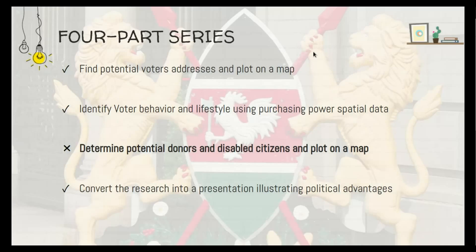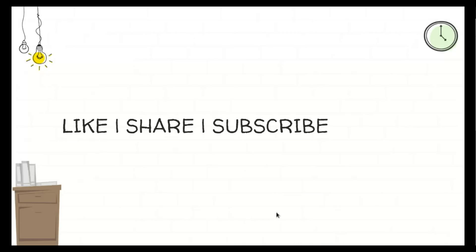Part three will involve determining potential donors and disabled citizens and plotting the data on a map. Finally, part four will involve converting the research into a presentation that illustrates the political advantages for the candidate. As usual, like, share, and subscribe — see you in part one!